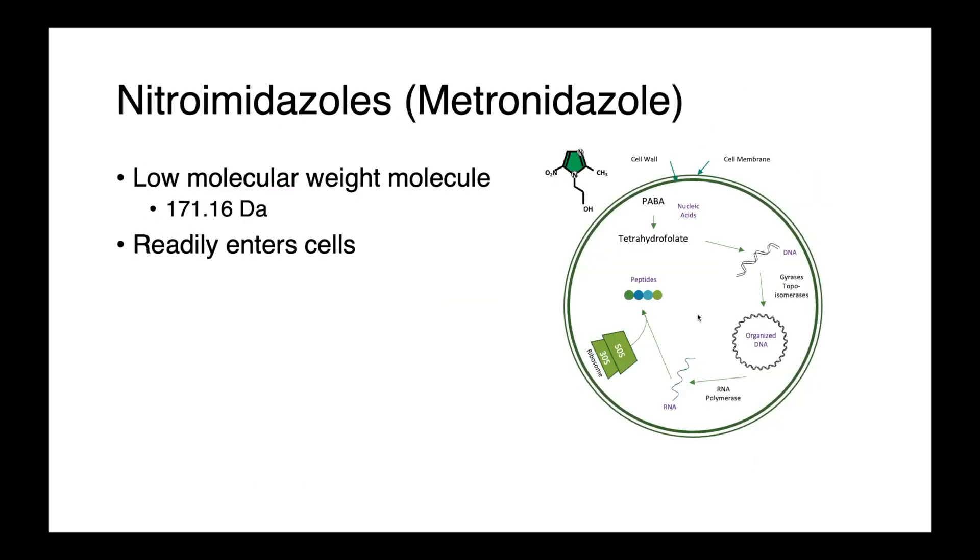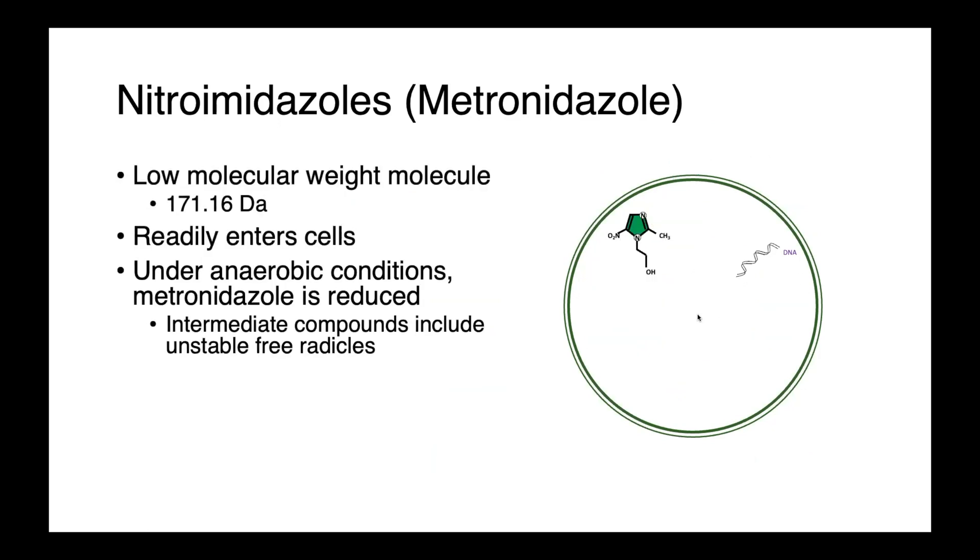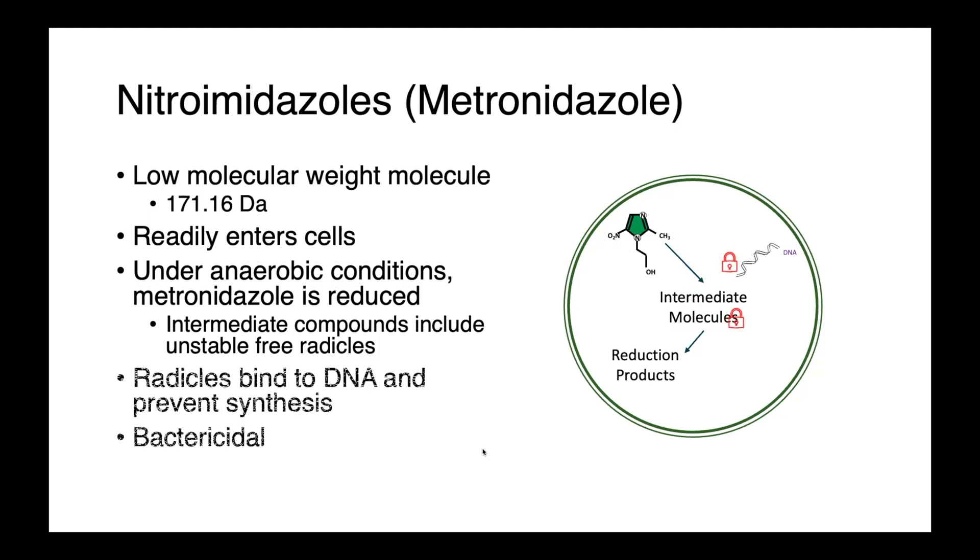We have the nitroimidazoles, or metronidazole. This is a low molecular weight compound, which really readily enters bacterial cells. Once it's made its way into the cell, under anaerobic conditions, it's chemically reduced. Intermediate molecules in this reduction pathway are free radicals that are able to bind to DNA and prevent synthesis, leading to dead bacteria. So this is a bactericidal antimicrobial.